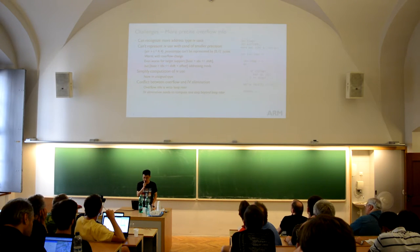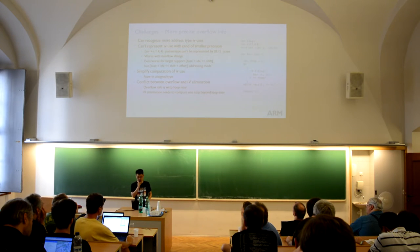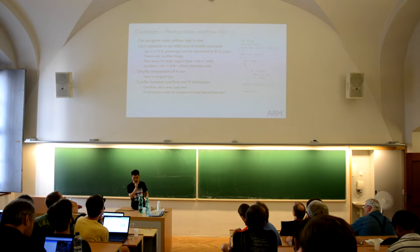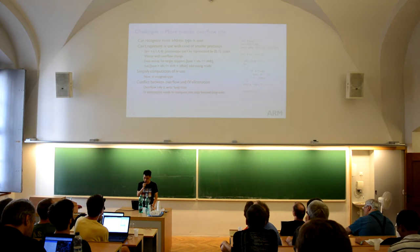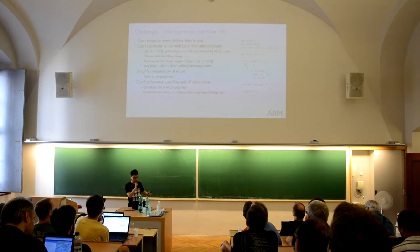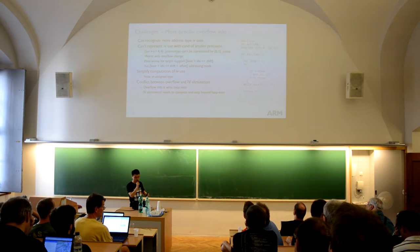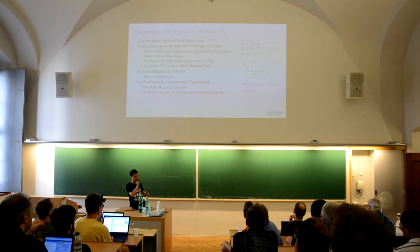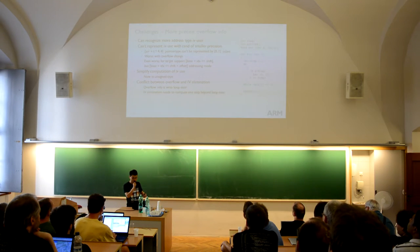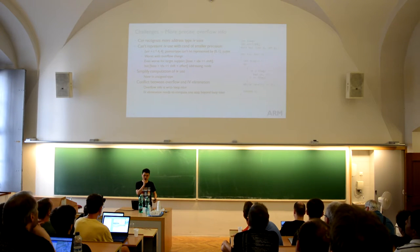Let's talk about how to get more precise overflow information. For now, GCC can compute a larger scale to be precise, and scalar evolution can compute quite accurate overflow information. We still need to use overflow information in IVO. One issue is that GCC can't represent an induction variable use with a candidate of smaller precision because it considers that candidate doesn't have enough precision to express the original use. This situation is even worse when a target supports the shift-addressing mode but not the offset of the shift-addressing mode — this applies to RISC-V and x64.